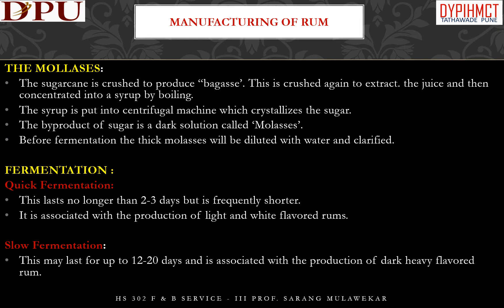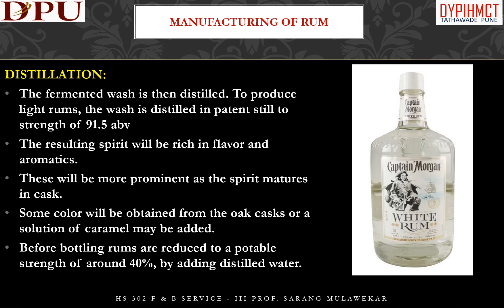Before fermentation, the thick molasses is diluted with water and clarified. While making rum, the manufacturer may decide whether to ferment the molasses quickly or slowly — each type produces rum of different quality. Quick fermentation lasts no longer than 2-3 days and is associated with light and white-flavored rums. Slow fermentation may last up to 12-20 days and produces dark, heavy-flavored rum. After fermentation, the wash is distilled. To produce light rums, the wash is distilled in a patent still to a strength of 91.5% alcohol by volume. Some color is obtained from oak casks, or a solution of caramel may be added.